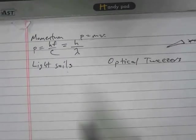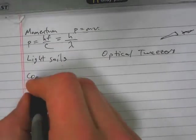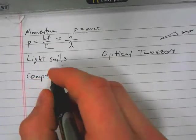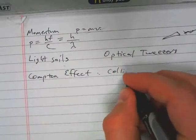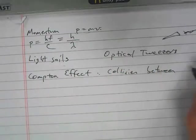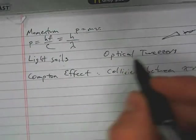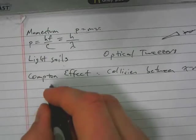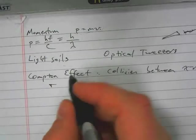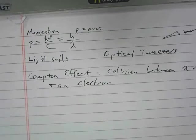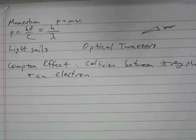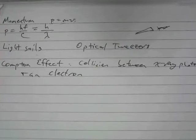Those are applications of momentum. Now, an important occurrence that happens because of conservation of momentum and of energy is called the Compton effect. And essentially, it's a collision between an x-ray, a photon, and an electron. Now, the reason that it's an x-ray is because something with a longer wavelength might not even interact with an electron at all, but an x-ray, it will do so.